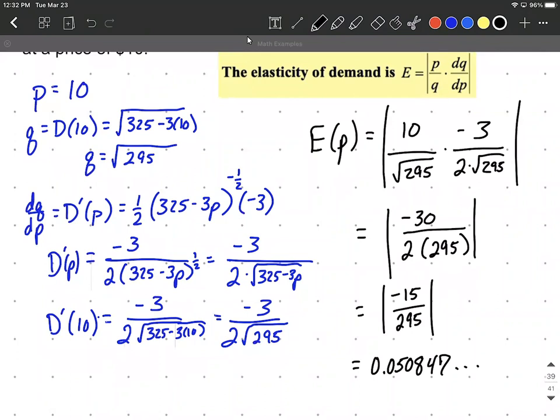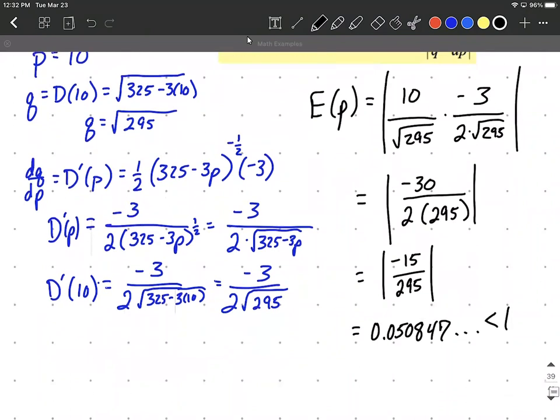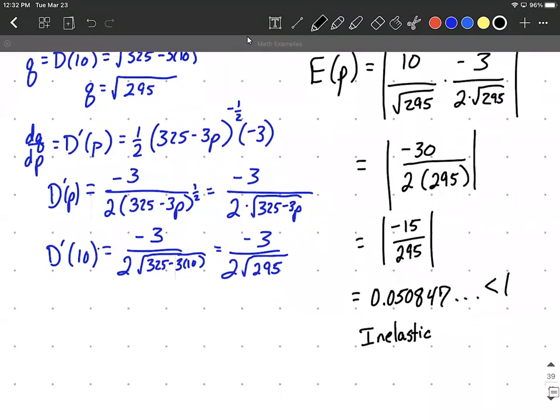Now what we want to do is figure out, is this inelastic, unitary, or elastic? So what we're doing is we're comparing the value that came out here to one. Because this is less than one, we're going to call this inelastic. Whenever it's less than one, what that means is if you increase your - for every one percent you raise your prices, demand will decrease by 0.5 dot dot dot percent. So we should be increasing our prices.